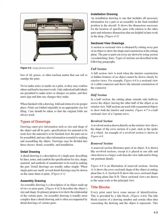A revolved section drawn directly on the exterior view shows the shape of the cross section of a part, such as the spoke of a wheel. A removed section illustrates parts of an object similarly to revolved sections, except it is placed at one side and often drawn to a larger scale to bring out pertinent details. Section A shows the cross-sectional shape at cutting plane line AA, and Section BB shows the cross-sectional shape at cutting plane line BB. These sectional views are drawn to the same scale as the principal view.